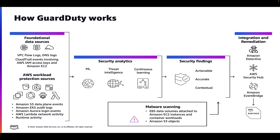EBS volumes to determine the presence of malware, runtime monitoring where GuardDuty can see process execution and kernel level details to detect activity like malicious library loads or process injection activity, and Lambda network activity logs to determine when Lambda is communicating with a malicious actor. These are just some of the examples from each of the different data sources.